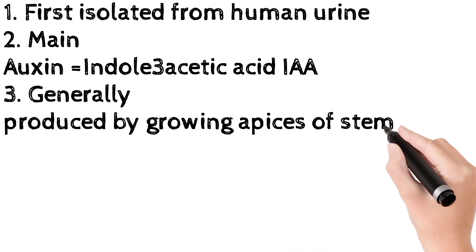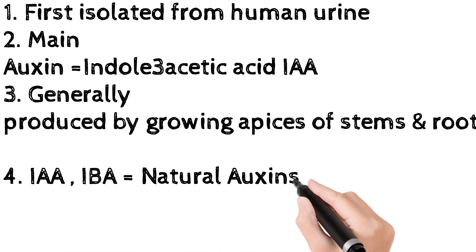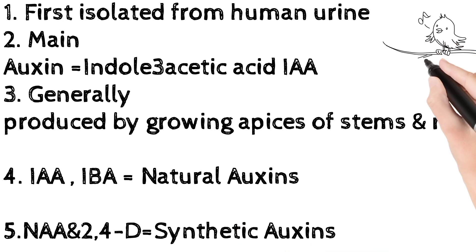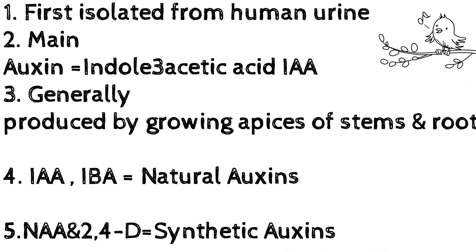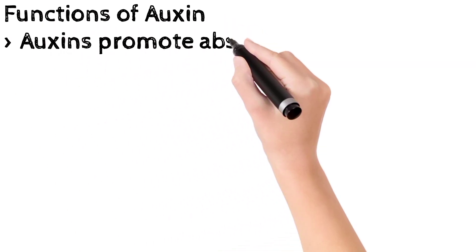Natural auxins are indole-acetic acid and indole-butyric acid. Synthetic auxins include naphthalene acetic acid and 2,4 dichlorophenoxy acetic acid. Now we will talk about the functions of auxins.